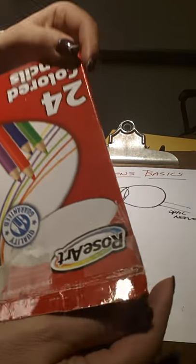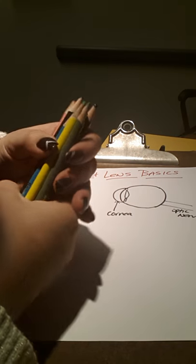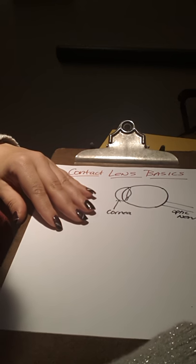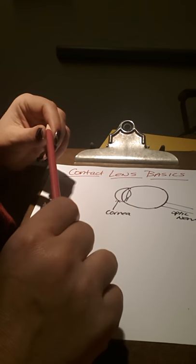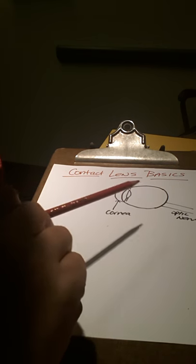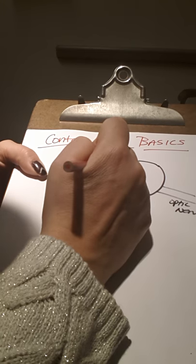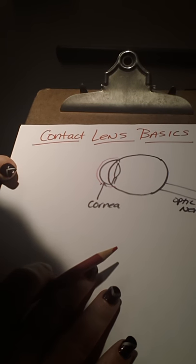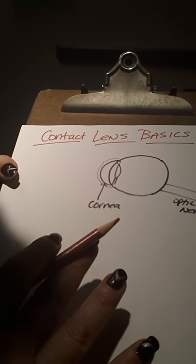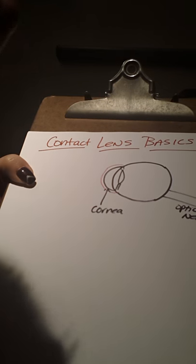I'm going to go ahead and switch over to some colored pencils. All right, now, basically, I want you folks to understand that when you put a contact lens on your eye, what happens is it drapes over this structure right here, the cornea. That's where it sits. That's where it settles, and it basically suctions right on to that structure.